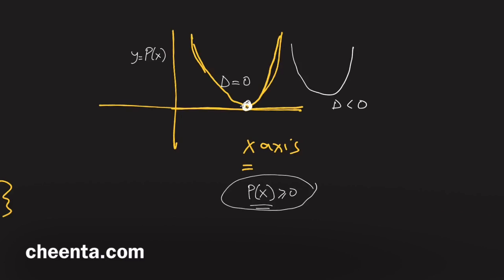Since P(x) ≥ 0 always, the graph — which is a parabola because it's a quadratic — always stays above the x-axis. In the worst case, it touches the x-axis. So the discriminant is less than 0 when the parabola stays entirely above the x-axis, and the discriminant equals 0 if it just touches the x-axis. Combining both cases, the discriminant is less than or equal to 0. We know this because P(x) ≥ 0, and we know that because P(x) is a sum of squares.